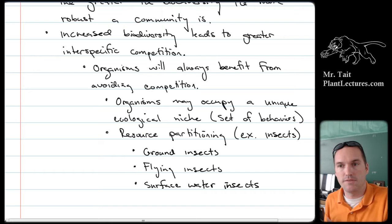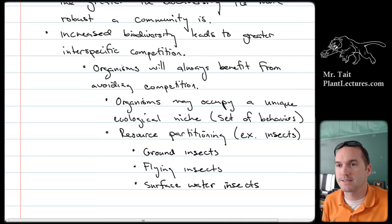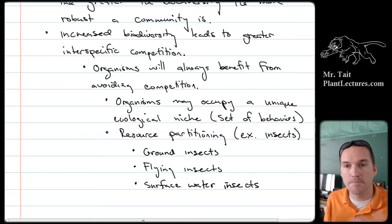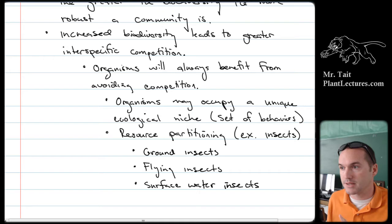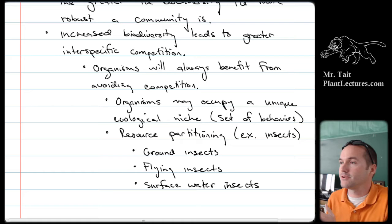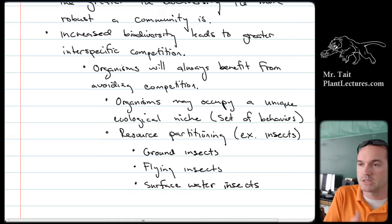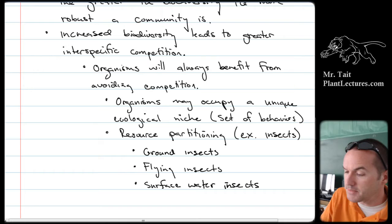Even if two organisms both eat flying insects, they might not necessarily compete. Take birds and bats — they both eat flying insects, but birds eat them during the day and bats eat them at night. There's probably a different subset of insects flying during the day versus at night, so they're not likely competing. Part of a bat's ecological niche is being nocturnal, and the reason it's nocturnal is to avoid competition with organisms hunting the same resources during the day.